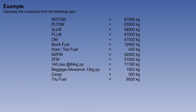Let us now work through a complete example of calculating the underload using the formula method, given all the relevant data. A table of all the necessary data is shown on screen. To make it easy, we will do this in three steps: step one will be the golden rule of working out the fuel state, followed by step two, the limiting traffic load — which includes the dry operating mass — and finally step three, the underload.